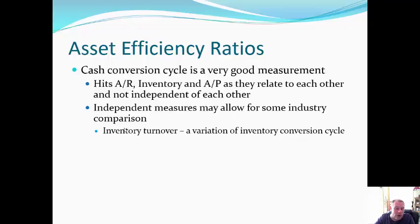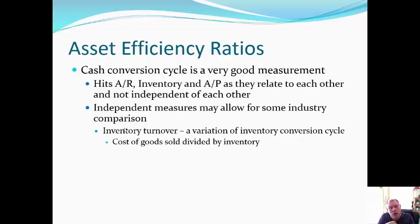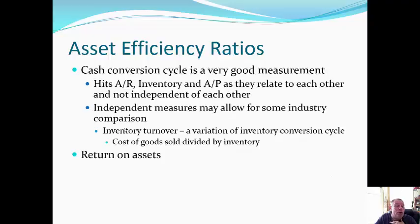Then there's inventory turnover — a variation of the conversion cycle — which is cost of goods sold divided by inventory. That tells us how many times does inventory turn over. In the case of Geneseo Coffee Company, since this is a food-type business, we would expect a faster turnaround. Another ratio is return on assets: net income divided by assets, measuring what return we got on the assets we deployed.